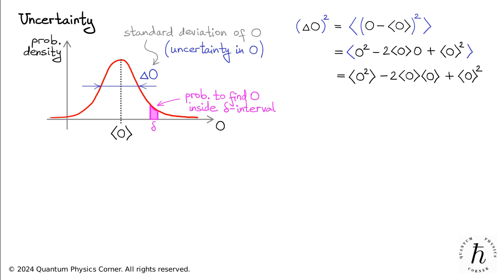Finally, by combining the last two terms into minus O mean squared and taking the square root of the right-hand side, we arrive at this expression for the uncertainty, delta O.